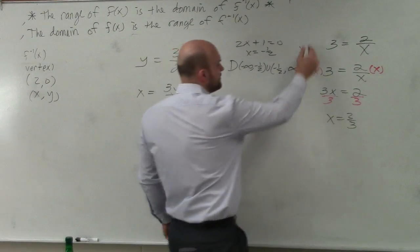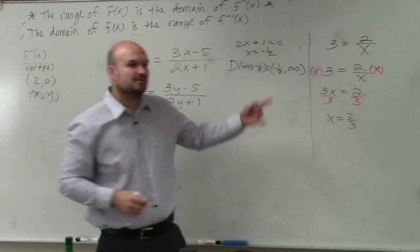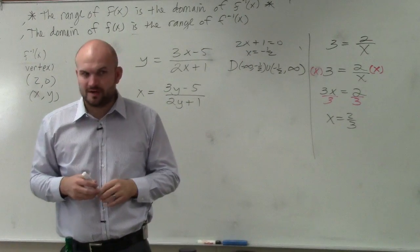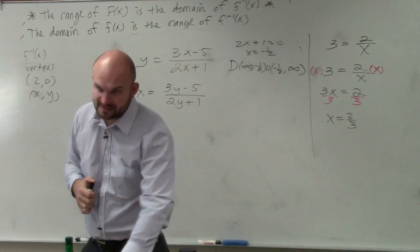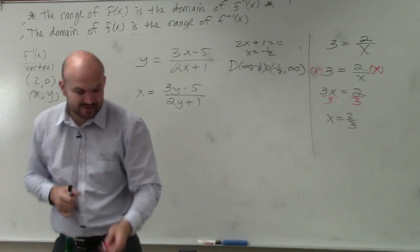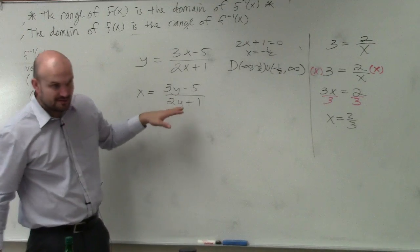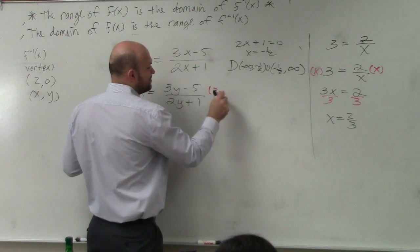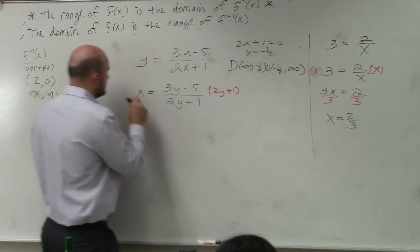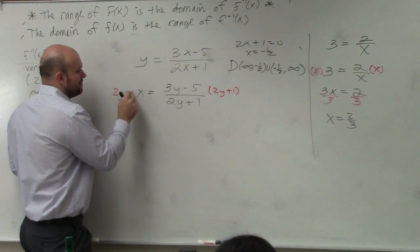The reason why I showed this problem is I wanted you guys to remember, whenever you have a variable in the denominator, you cannot solve for that variable. You have to get that variable off the denominator. So what I'm going to do to get this y off the denominator is I'm going to multiply by 2y plus 1 on both sides.